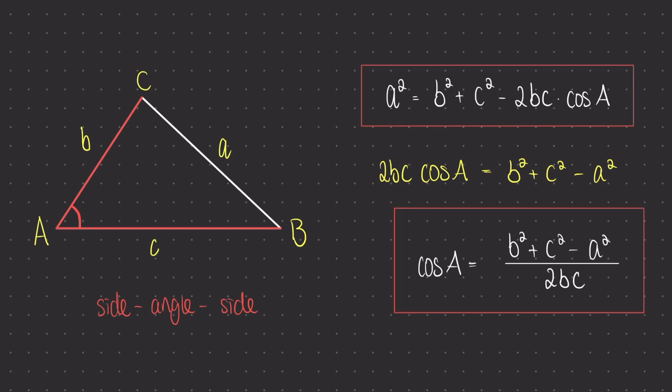These are the two versions of the cosine rule that I recommend you are familiar with. Personally, I think the first version should be enough, as if your algebra is strong enough, you should be able to rearrange and solve for A. However, if you struggle with rearranging, this second version of the equation is very useful as well. For some specifications you'll be given both; other specifications just the first equation.